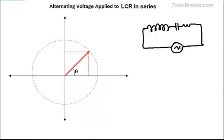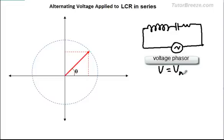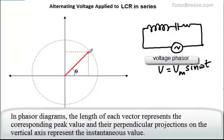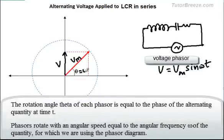Now let's analyze the LCR circuit using phasors. A phasor is a vector used to represent voltages and currents. For instance, if V equals Vm sin omega t, the phasor is a red arrow whose length is Vm — the peak voltage — and the instantaneous value is read as the projection on the y-axis, giving Vm sin omega t. The angle theta equals omega t, and this vector rotates with angular speed omega.